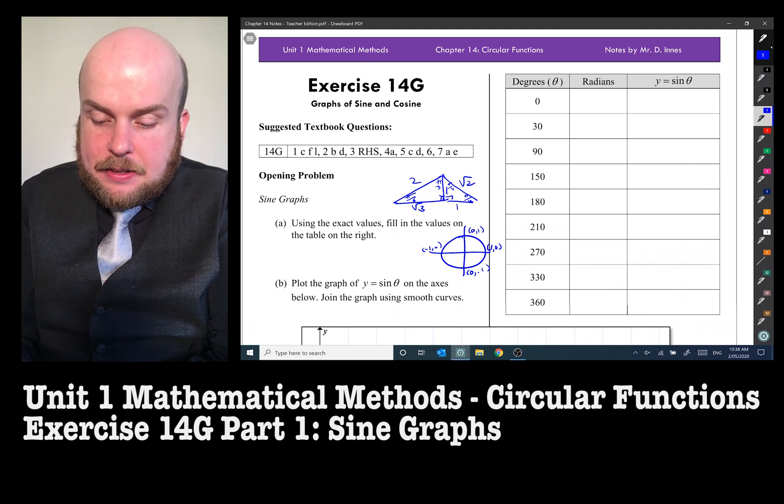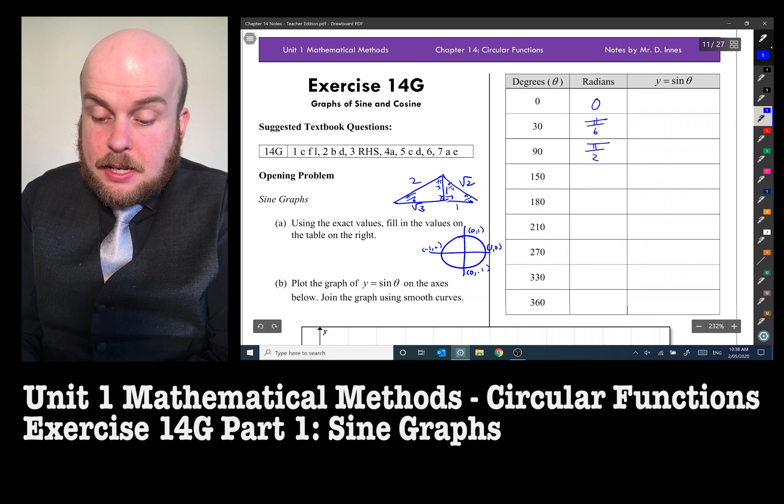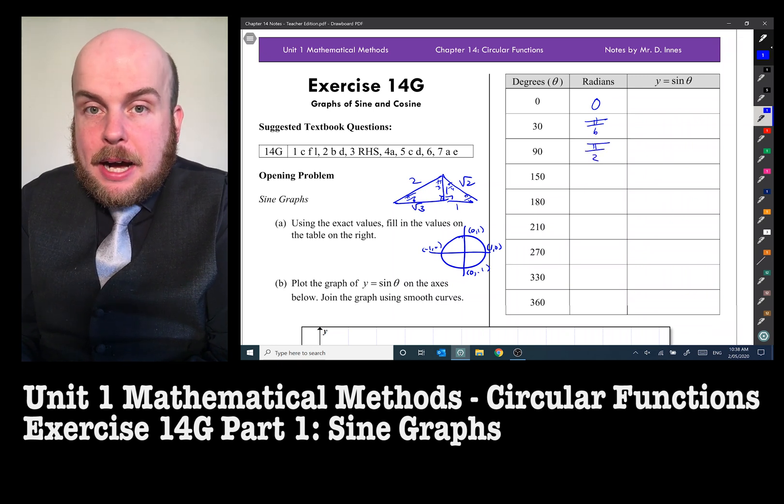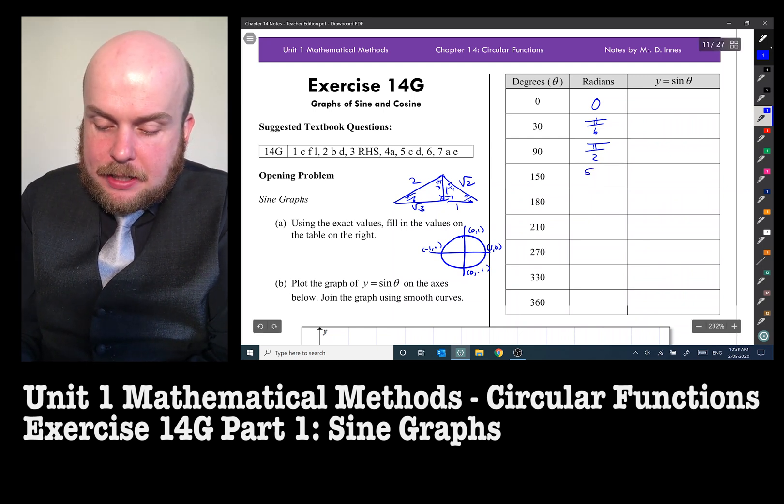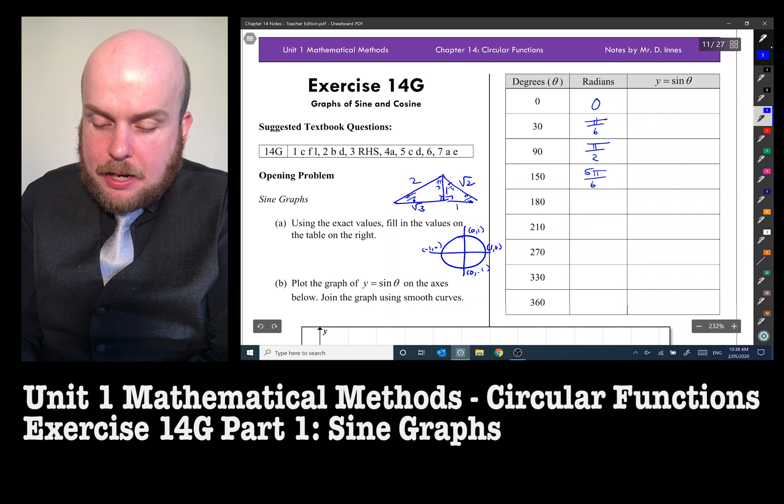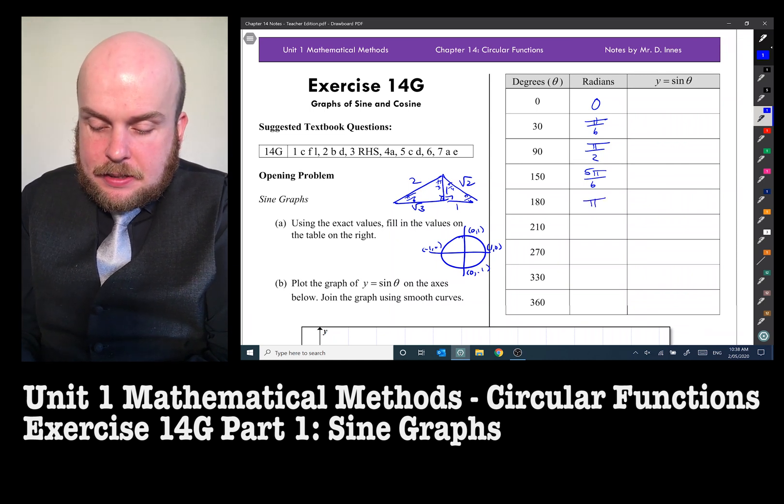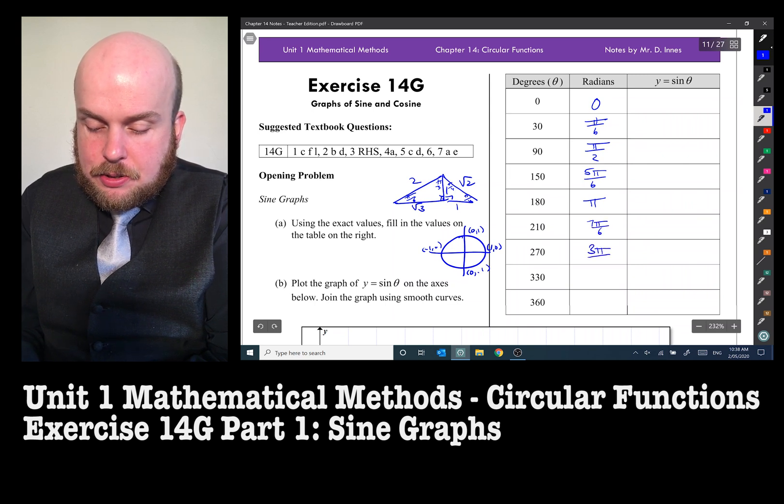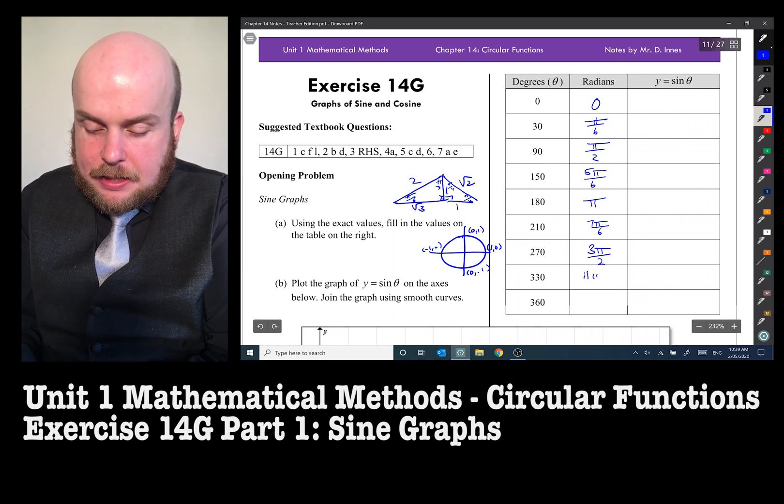So radians of 0, thankfully 0. This is pi on 6. This is pi on 2. Now 150 is the same as saying pi take away pi on 6. So that's going to be 5 pi on 6. That's going to be pi. That's going to be pi plus pi on 6, that's 7 pi on 6. 3 pi on 2. This is 2 pi take away pi on 6, so that's 11 pi on 6. And then we've got 2 pi.